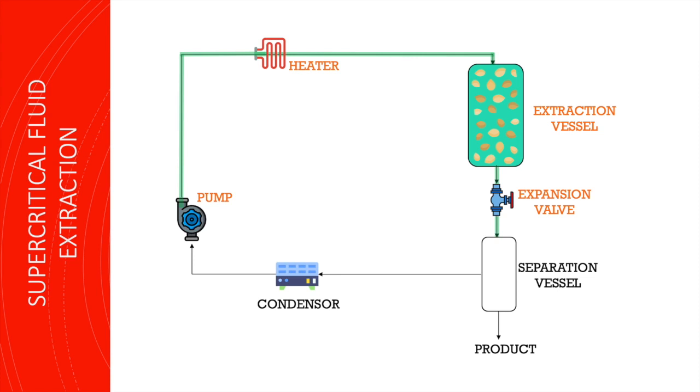Fifth step, as a result of the depressurization, the carbon dioxide becomes a gas and can no longer hold the oil. Therefore, separation happens between seed oil and carbon dioxide in the separator.